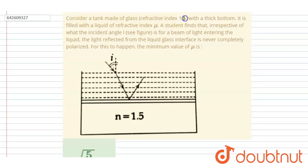Consider a tank made of glass of refractive index 1.5 with a thick bottom. It is filled with a liquid of refractive index mu. A student finds that irrespective of what incident angle i is for a beam of light entering the liquid, the light reflected from the liquid-glass interface is never completely polarized.